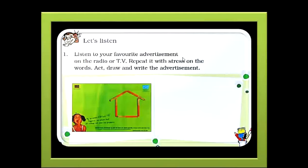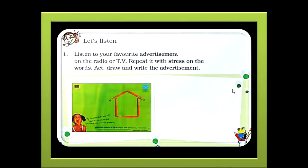Next we have Let's Listen. Listen to your favorite advertisement on the radio or TV. Repeat it with stress on the words. Act, draw and write the advertisement. Here is an interesting activity for you to do children. If you have a favorite advertisement from a radio or a TV, you need to learn the advertisement, then act it out. And finally, you need to draw and write down the advertisement in the space that is provided here. So this is your home assignment children. I cannot wait to know your favorite advertisement children.